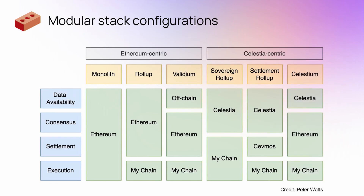And then finally you've got this idea of a Celestium, which is basically a Validium that uses Celestia for data availability. On paper, it has similar security trade-offs as a Validium, except that it has slightly higher crypto-economic guarantees because of Celestia's data availability sampling and slashing.